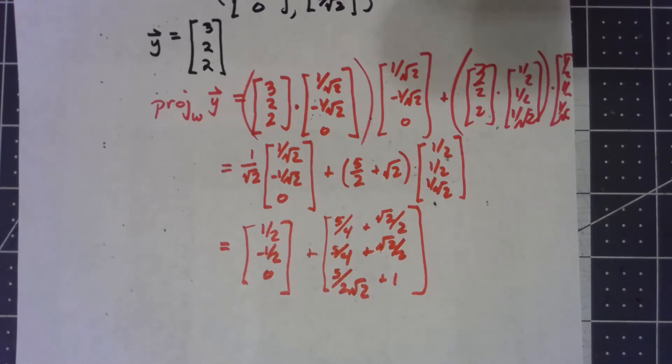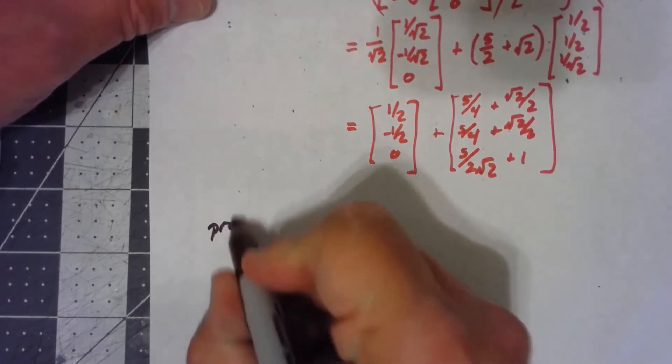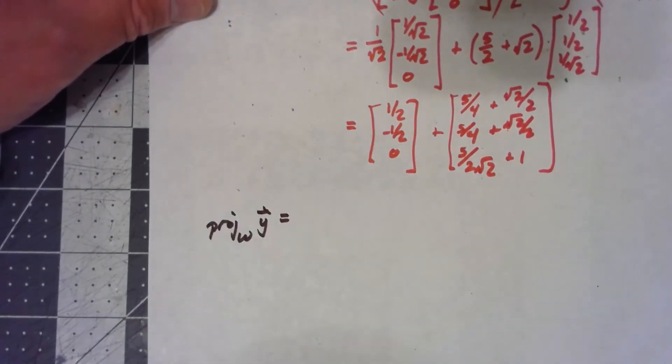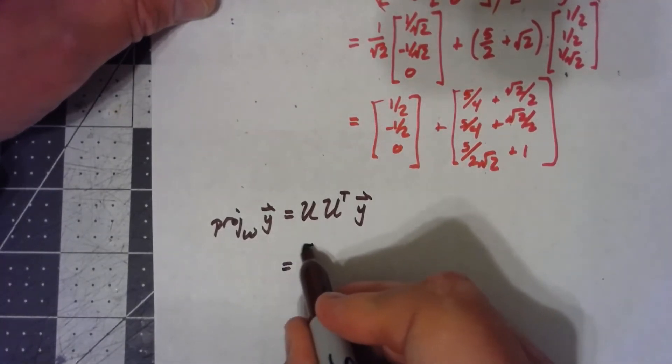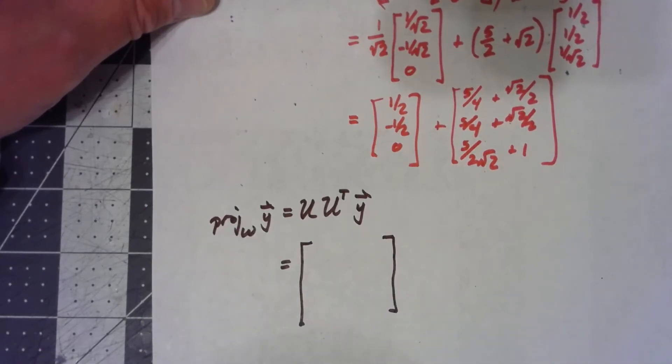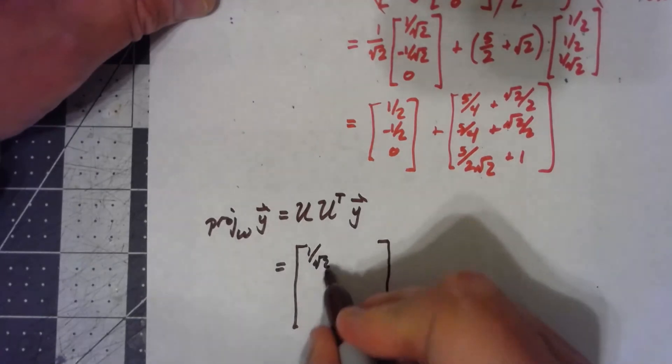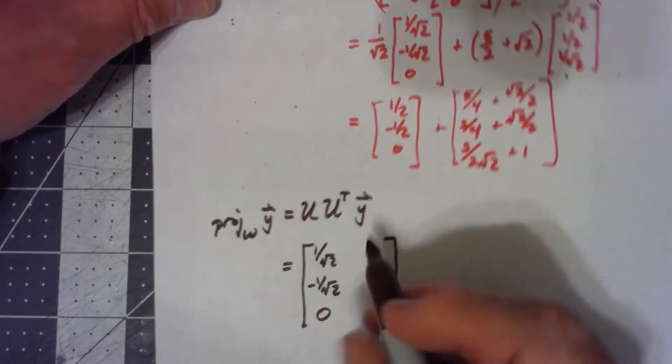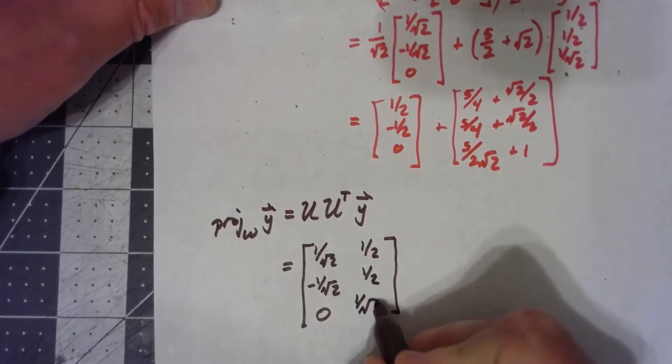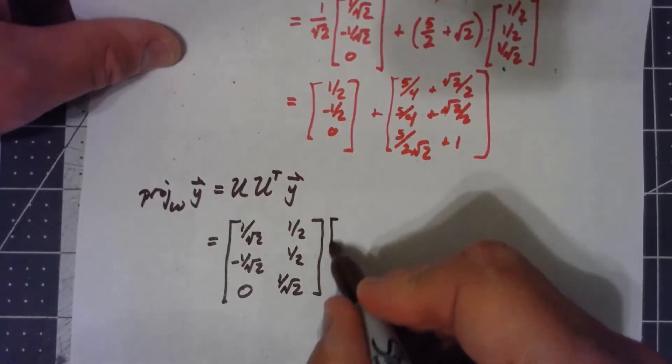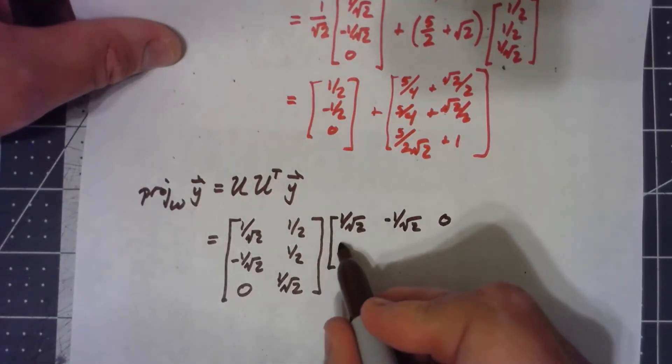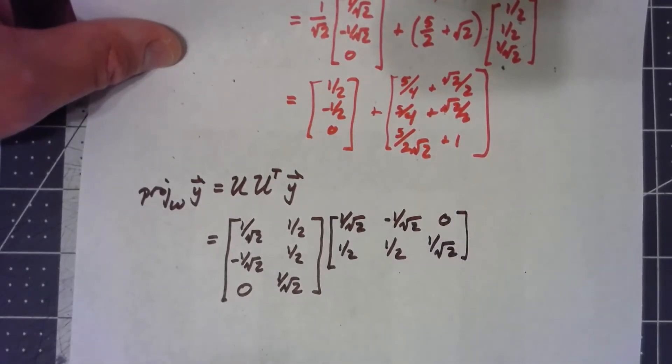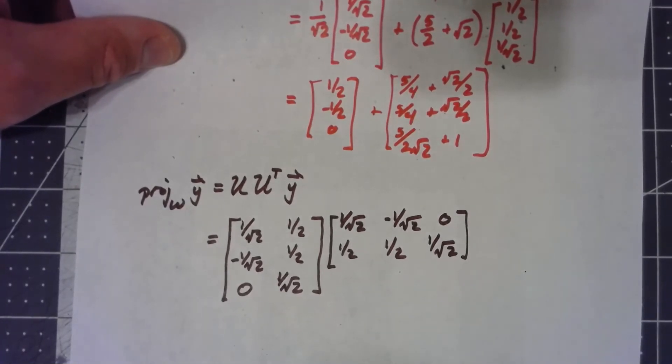Let's focus on the other part. Rather than doing it this way by dot product, it said that another way to figure out the projection onto W of Y is to do U times U transpose times Y. My matrix U is what I get by putting [1/√2, -1/√2, 0] as my first column and [1/2, 1/2, 1/√2] as my second column. So U transpose is going to be [1/√2, -1/√2, 0; 1/2, 1/2, 1/√2]. I then take that times my Y vector.